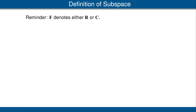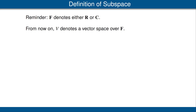Before we get started with subspaces, remember that F denotes either the field R of real numbers or the field C of complex numbers. From now on, let's also have the convention that V denotes a vector space over F. The advantage of having this assumption is that we do not need to keep putting in the hypothesis of each result, 'let V be a vector space.' The phrase 'vector space over F' simply means that F is the scalar field. So for example, we call V a real vector space or a vector space over R when F equals R, and we call V a complex vector space or a vector space over C when F is the field of complex numbers C.